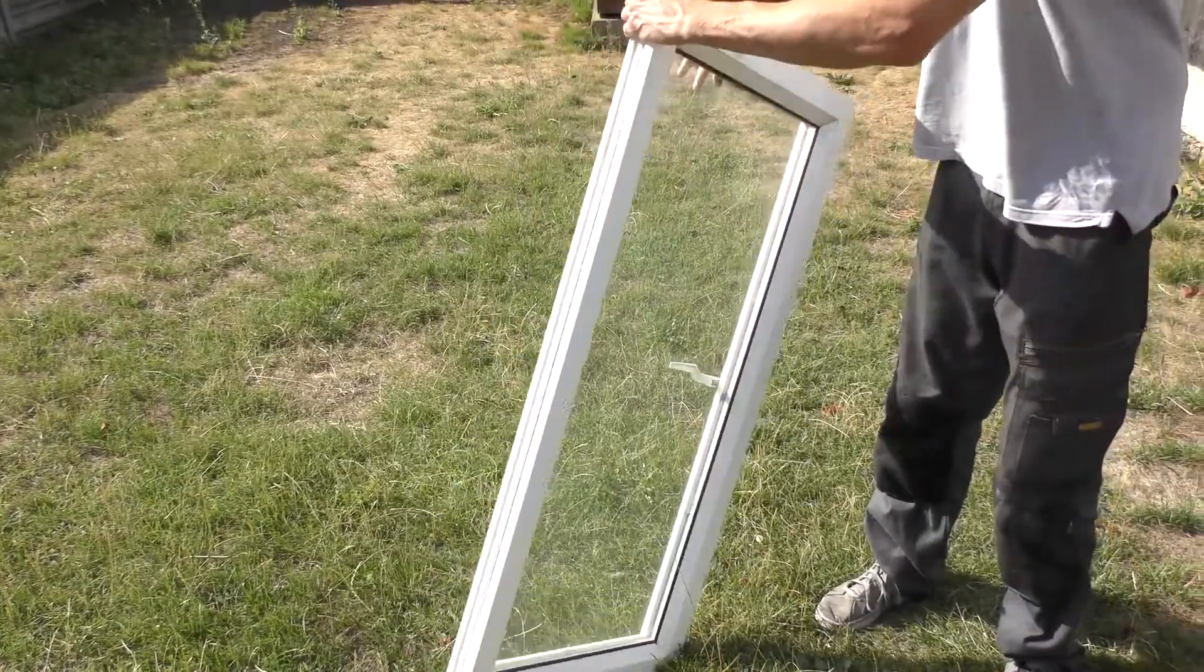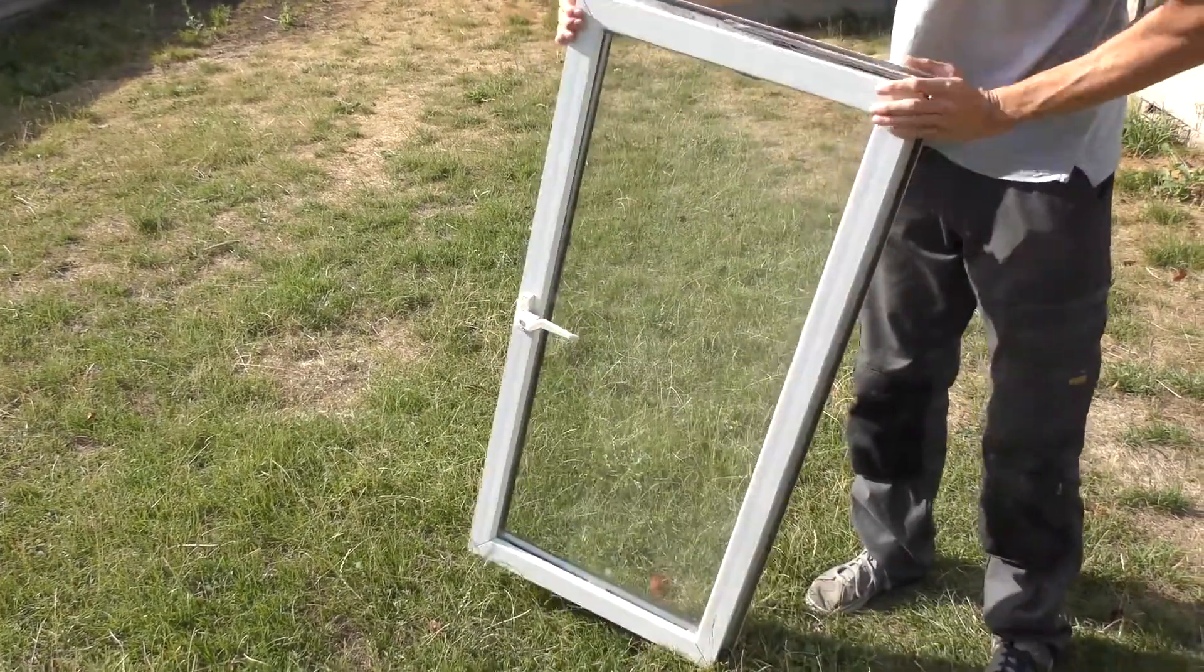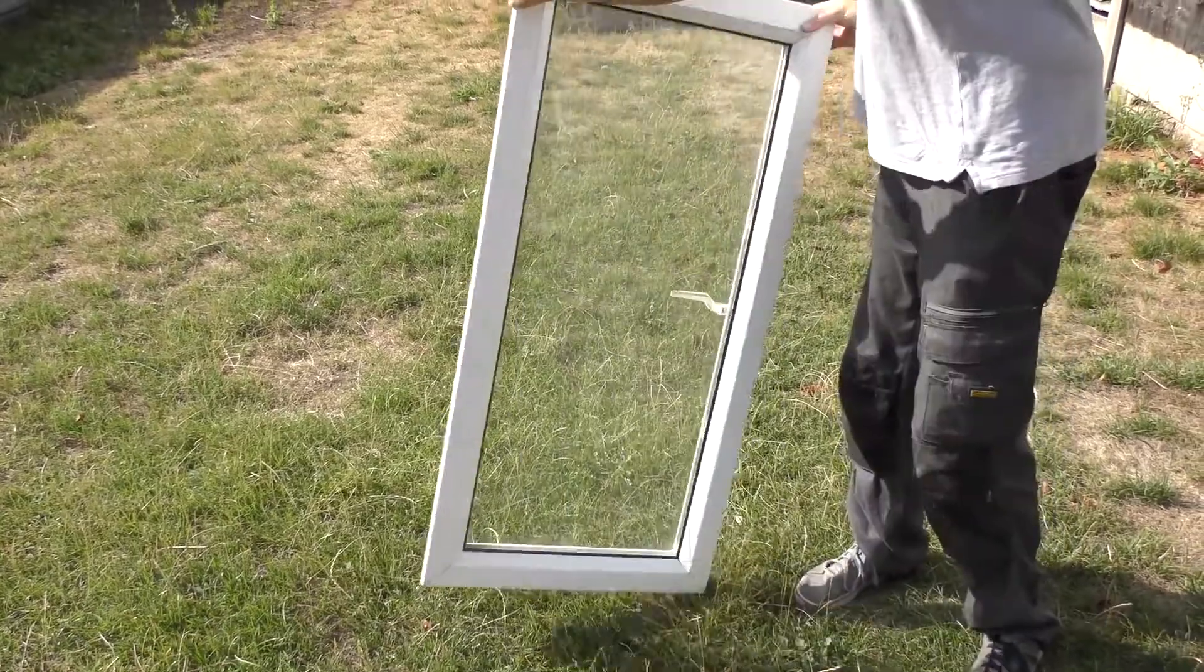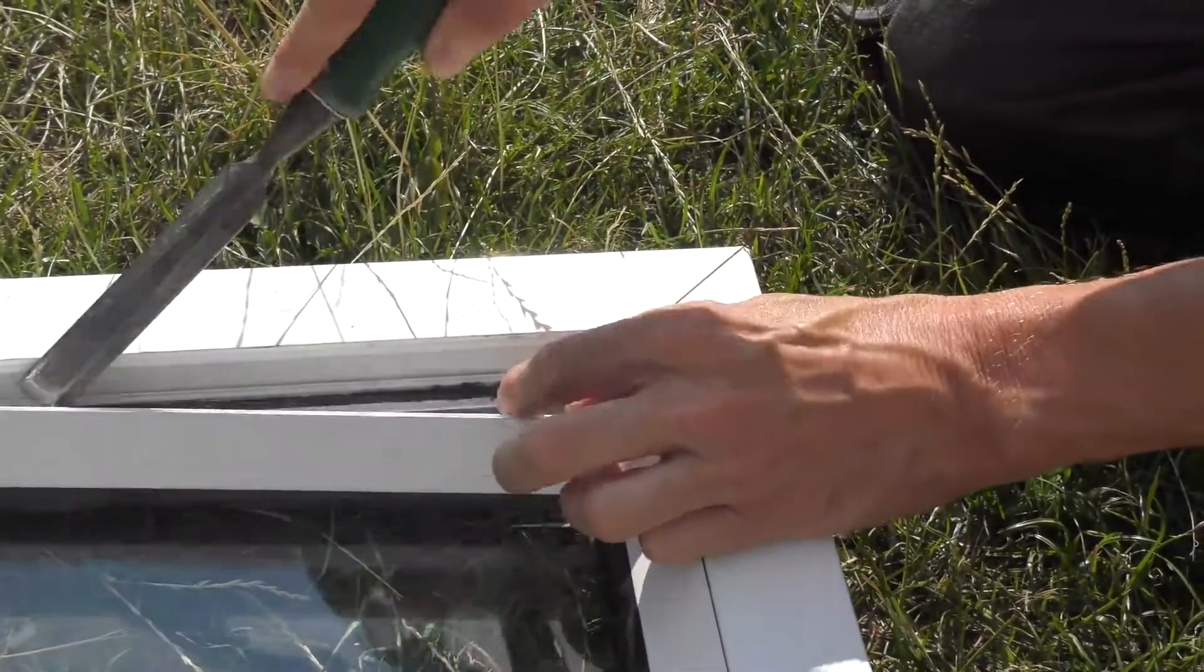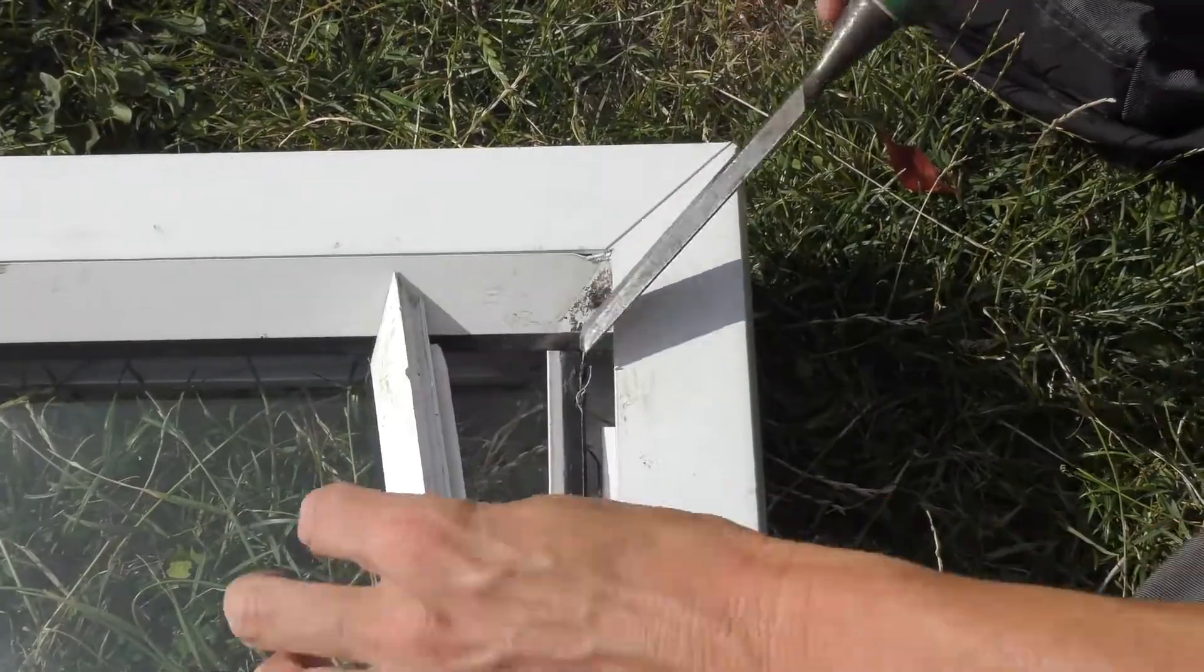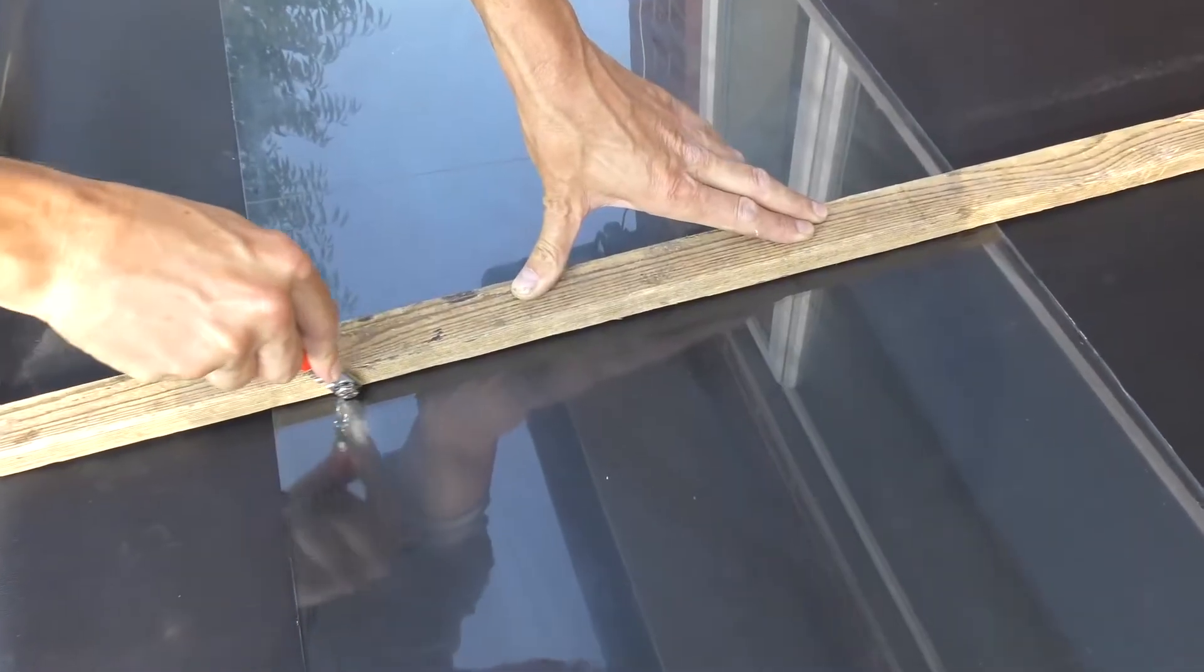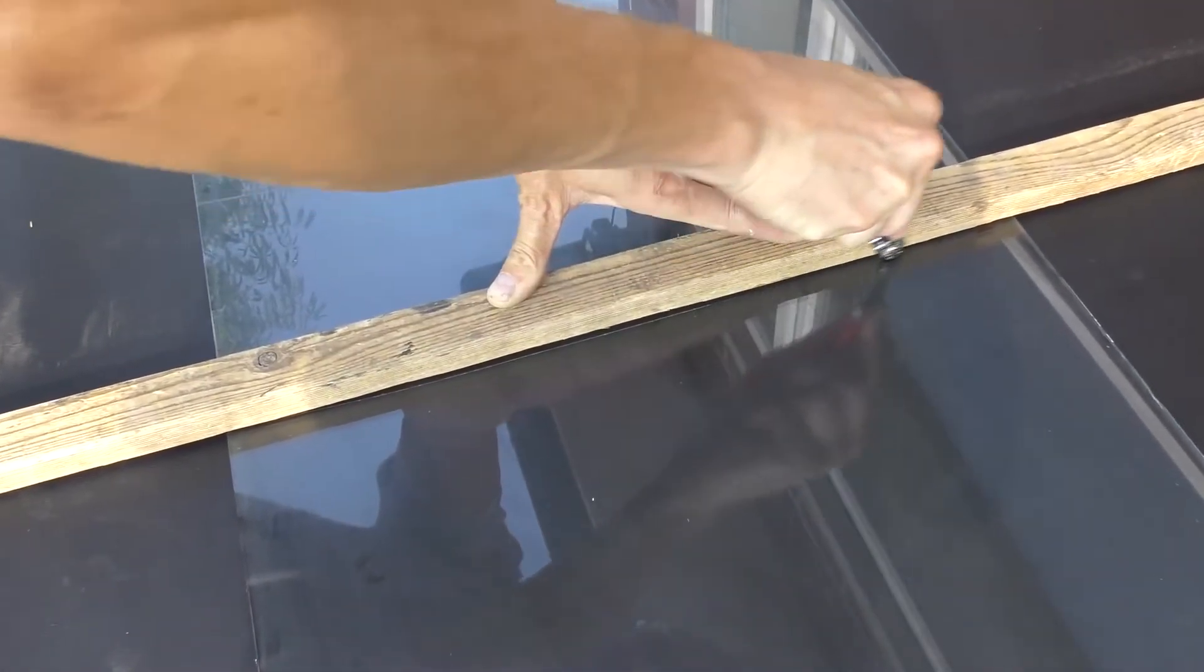The first thing we need is a flat surface so I found this abandoned window in a skip and used it because it was free, although you could use melamine wood at a push. Then it's just a matter of popping out seals and making a mark for the glass cutter so that you have two pieces.